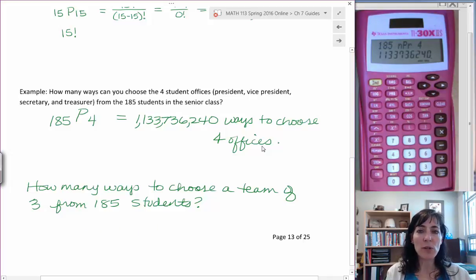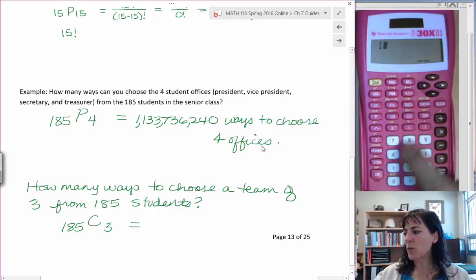And so we would want to use combinations for that. So it would be 185 choose three with combinations, and that is on your calculator as well. So 185.